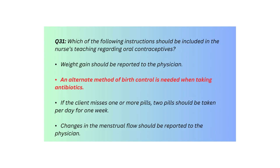Q31. Which of the following instructions should be included in the nurse's teaching regarding oral contraceptives? Weight gain should be reported to the physician; an alternate method of birth control is needed when taking antibiotics; if the client misses one or more pills, two pills should be taken per day for one week; or changes in the menstrual flow should be reported to the physician.